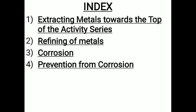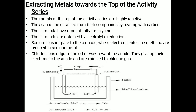Now we start extraction of metal towards the top of the activity series. The metals at the top of the activity series — like potassium, sodium, calcium, magnesium, and aluminum — are highly reactive. They cannot be obtained from their compounds by heating with carbon, because these metals have more affinity for oxygen.